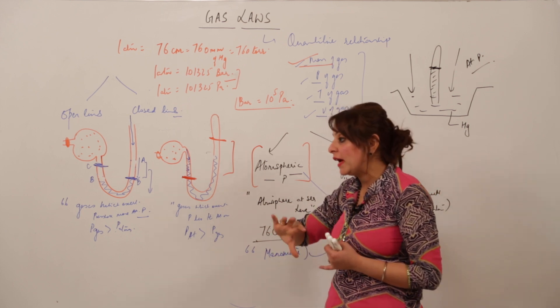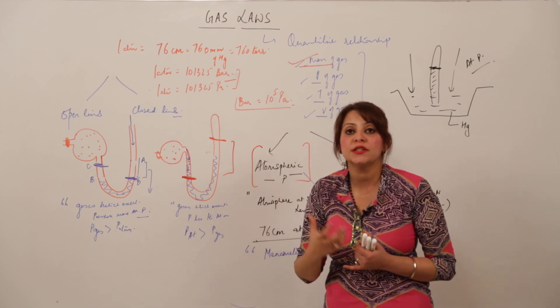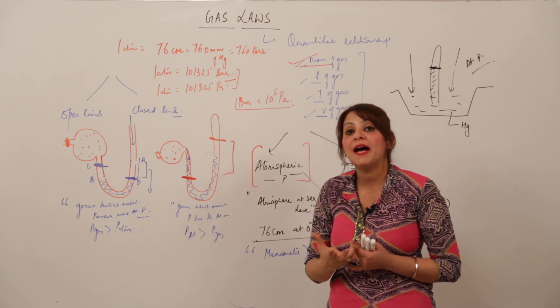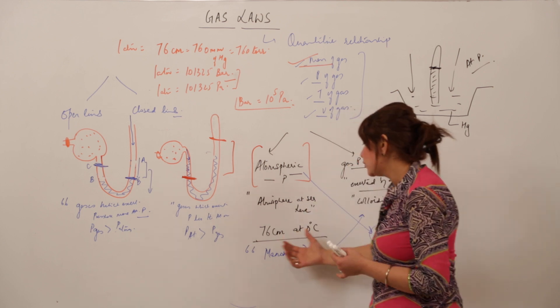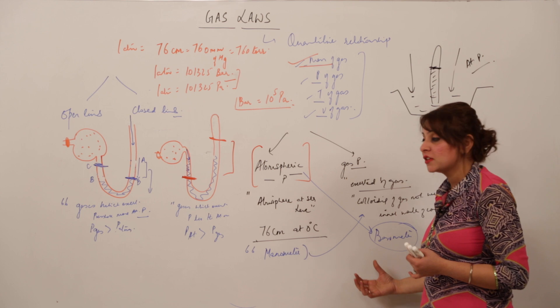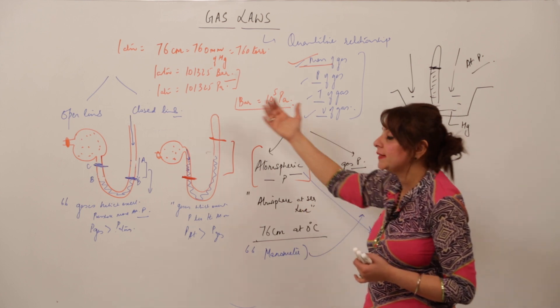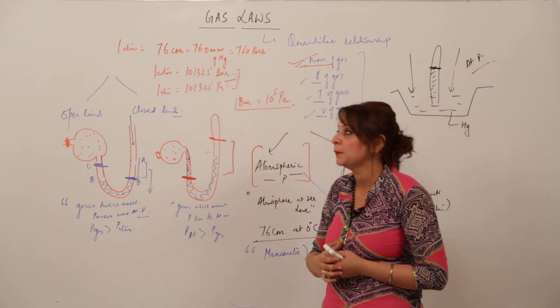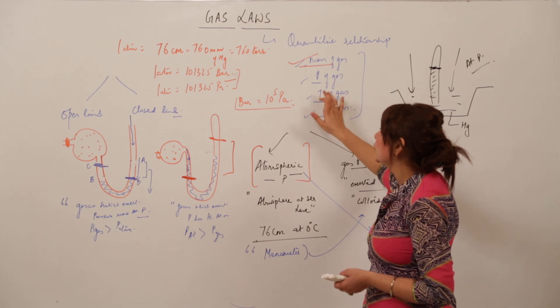Now you all know what pressure is, how the gas is exerting the pressure, what is the cause behind it. What the term atmospheric pressure means, what those instruments are doing - the manometer and the barometer, how they are working, what are the units we are using and how we can convert them. Taking into consideration the third property, that is the temperature of the gas.